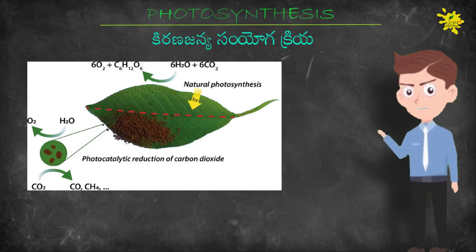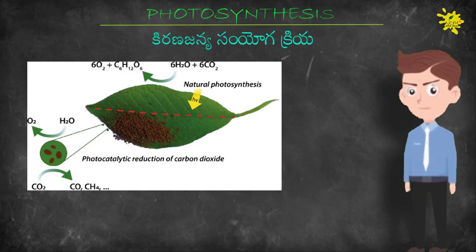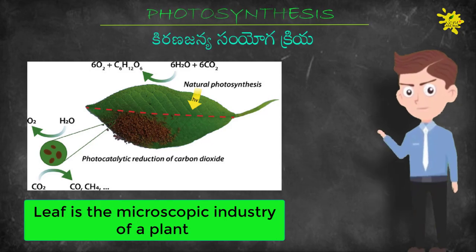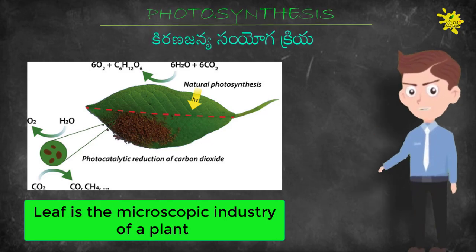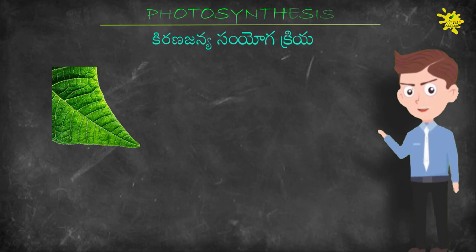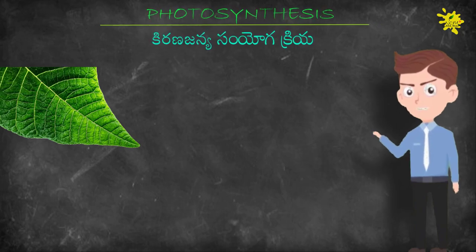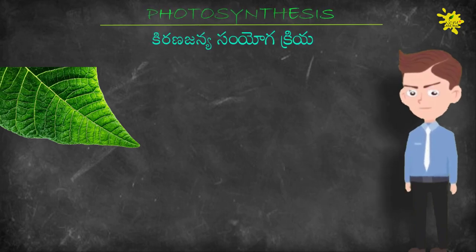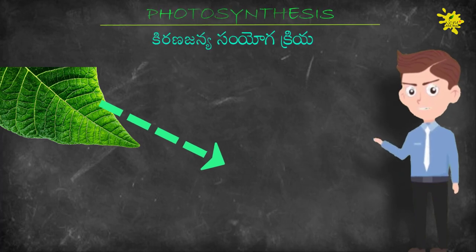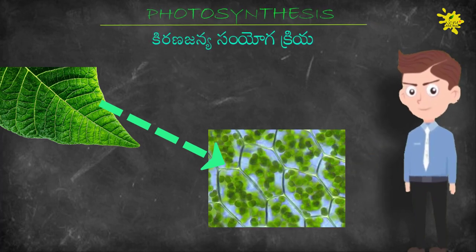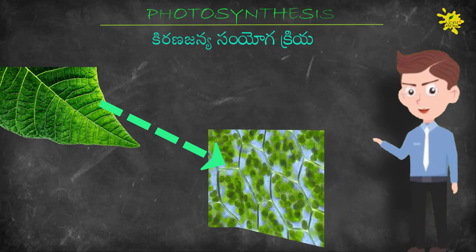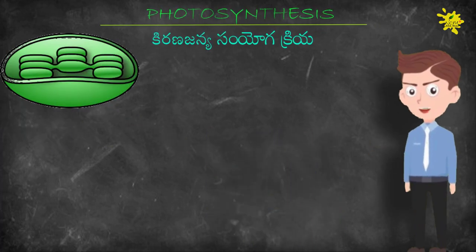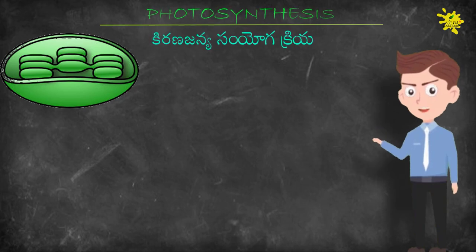The leaf is the main site for performing this photosynthetic process, so we call it the food industry of the plant. Inside the leaf, the mesophyll cells are present. In the mesophyll cells, many chloroplasts are present.